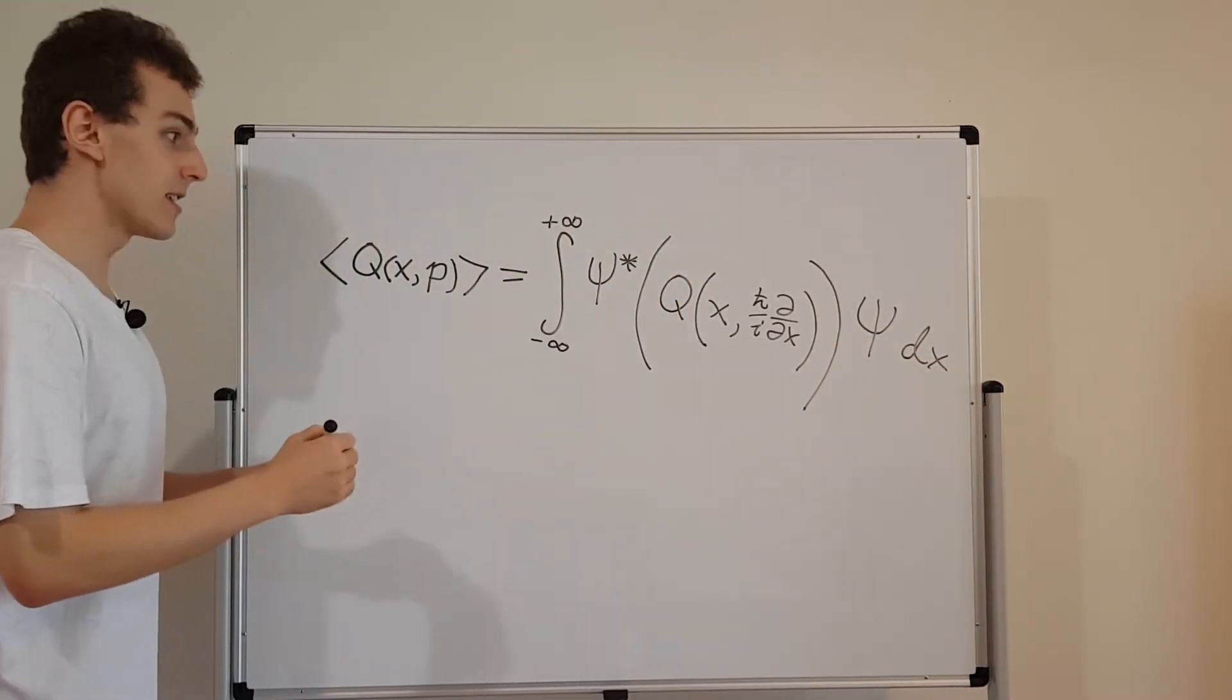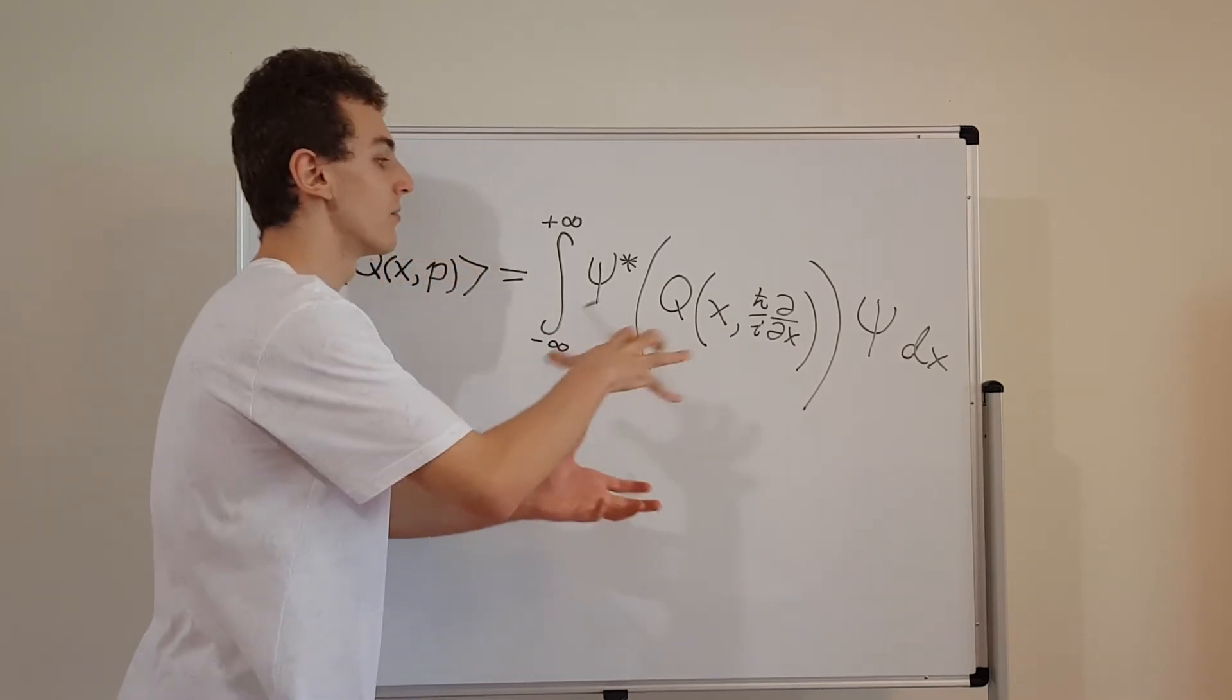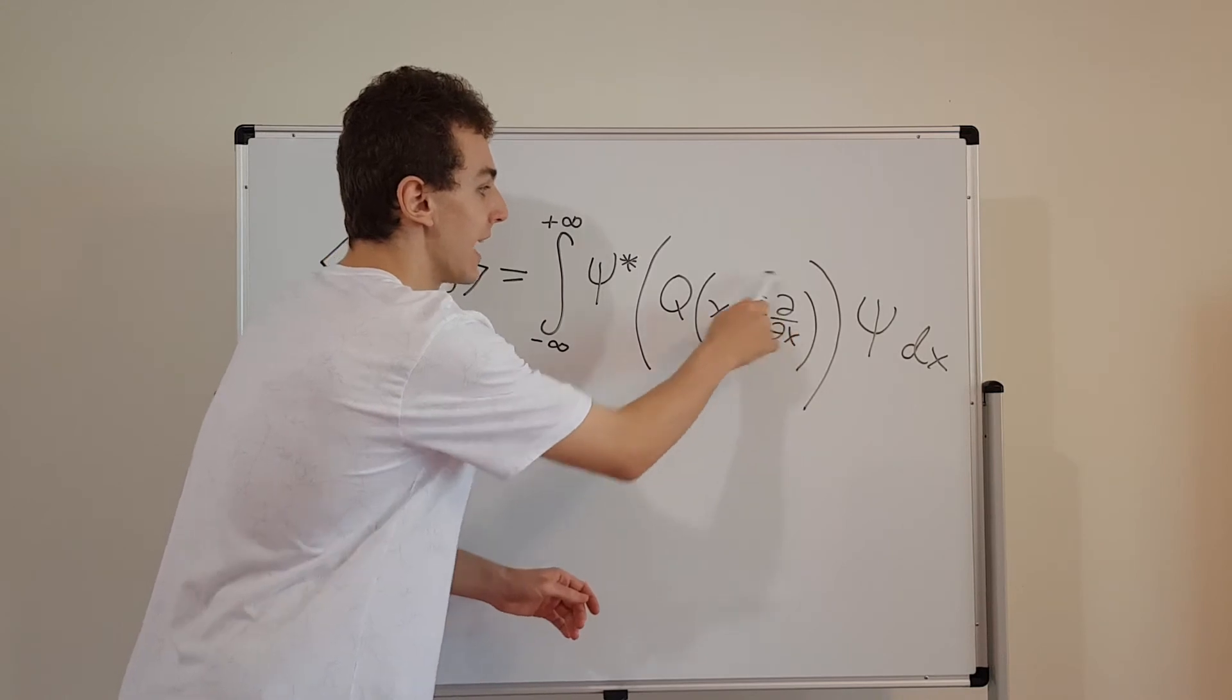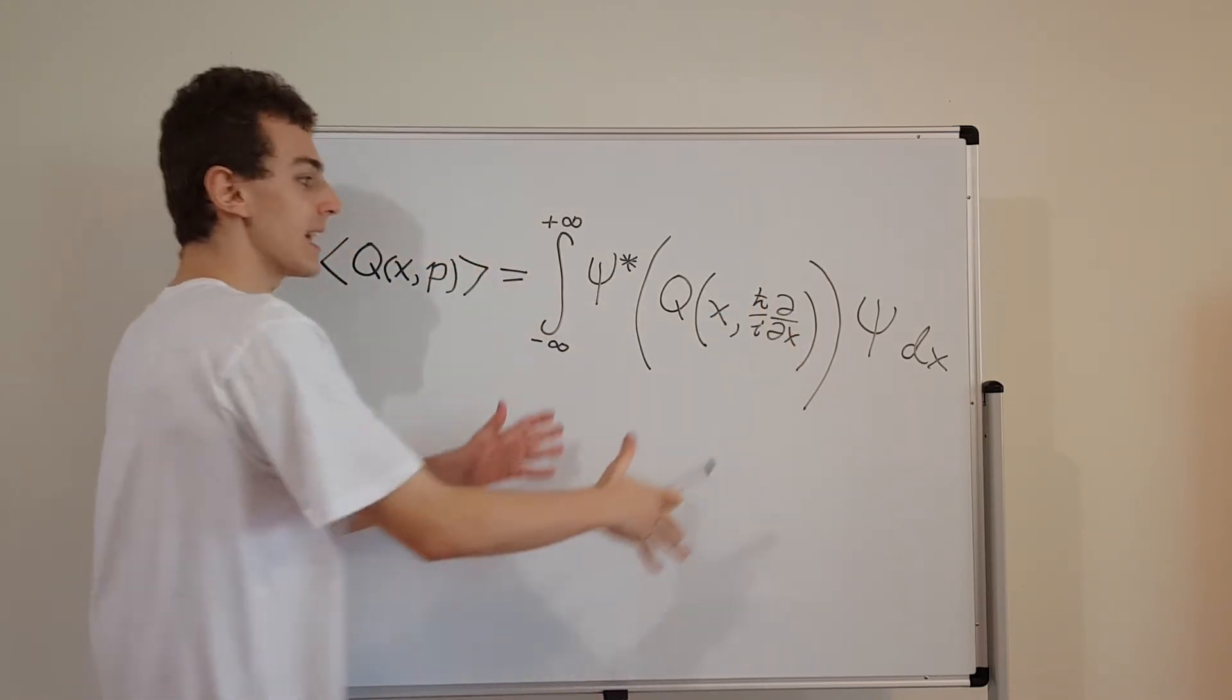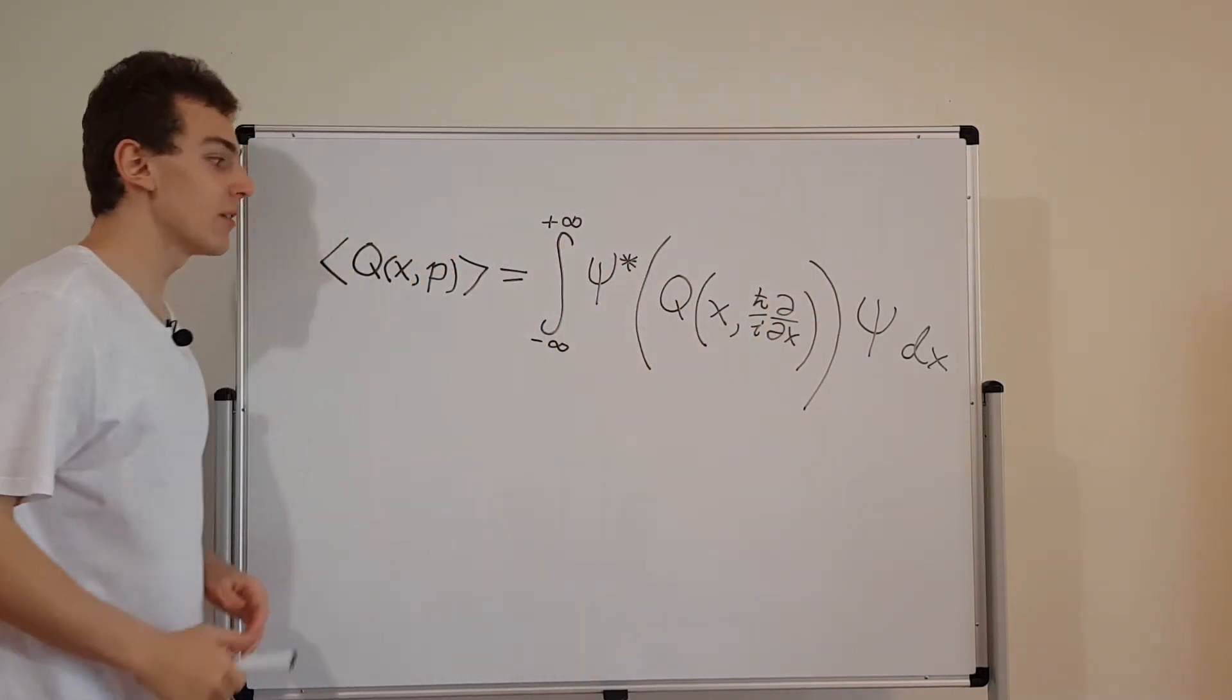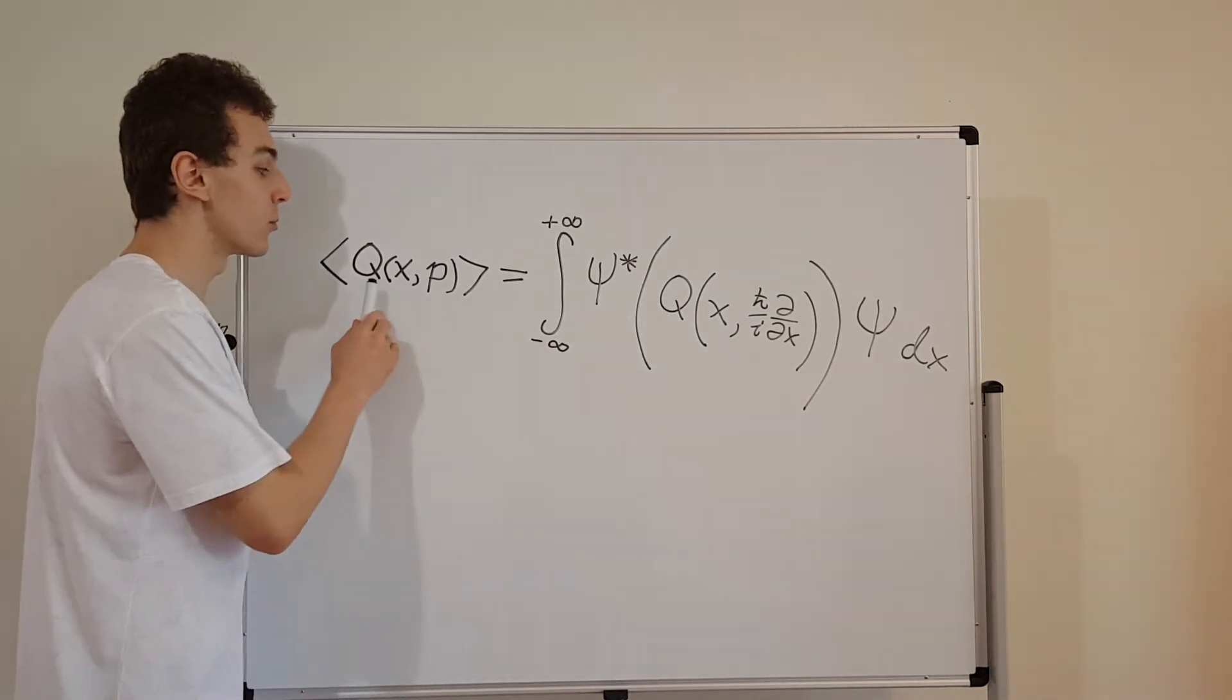So this is the definition. What we're putting in the middle is this kind of relationship that links together Q in terms of position and momentum. And if we sandwich that between Psi star and Psi and then integrate over the entire domain, that's going to give us a number. And that number is the expectation value associated with Q.